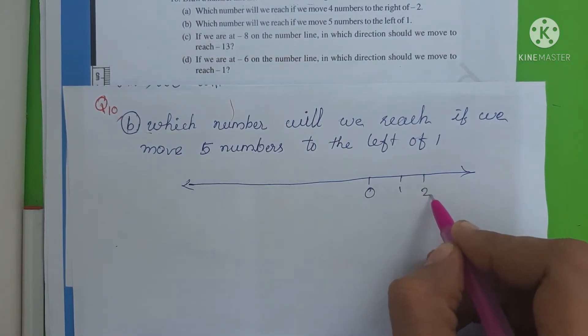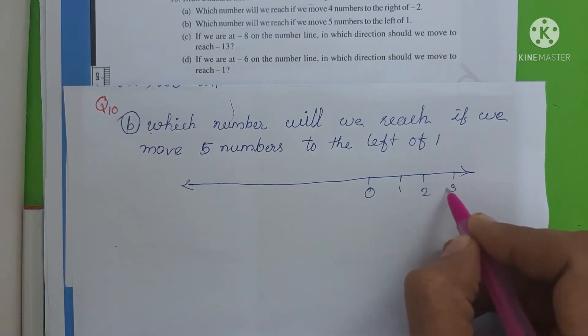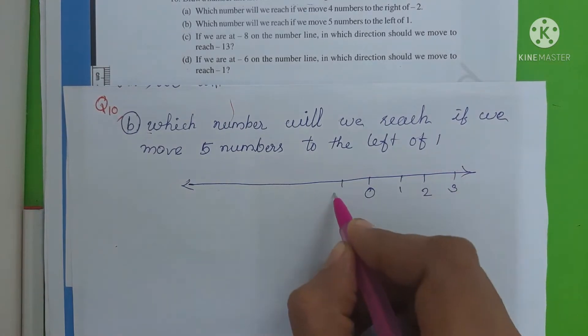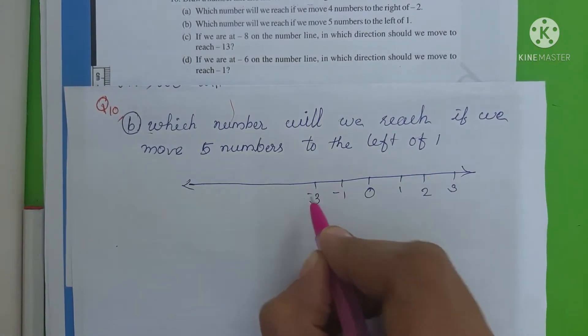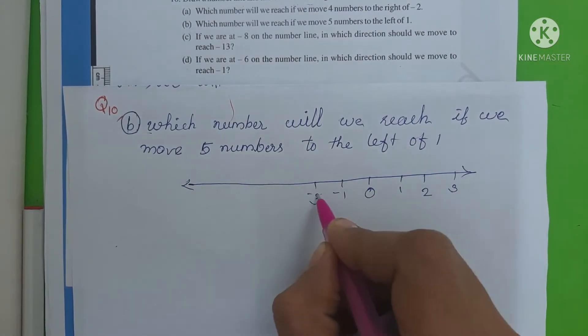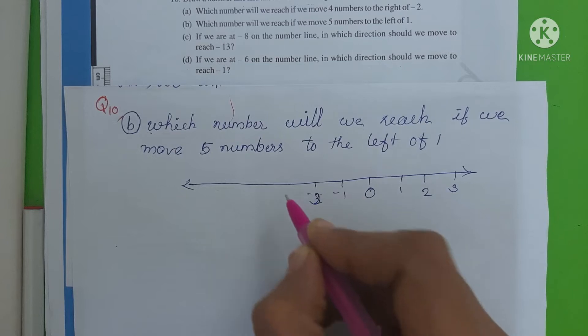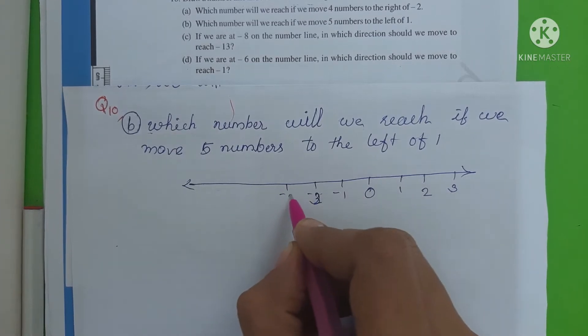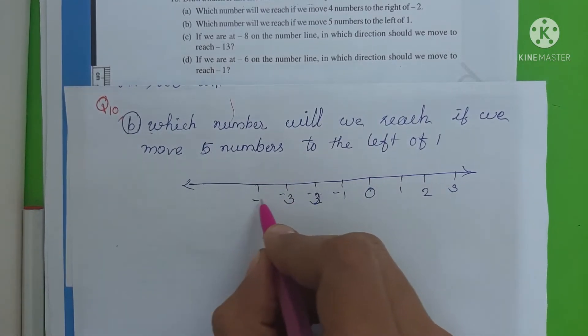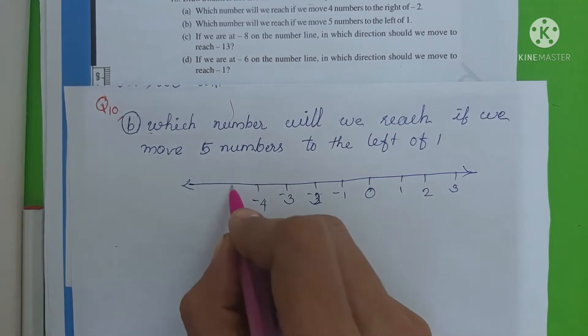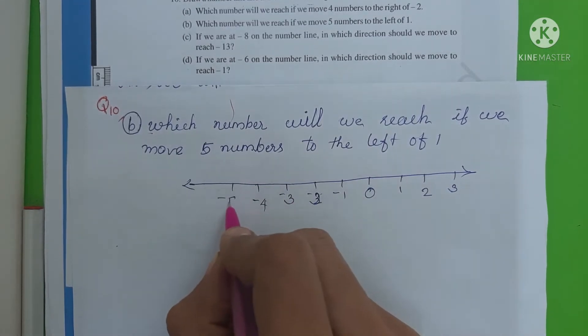We continue plotting on the number line: minus 1, minus 2, minus 3, minus 4, minus 5.